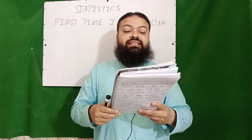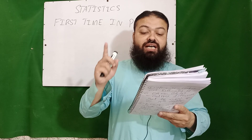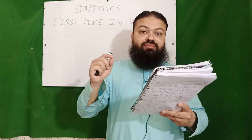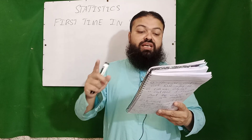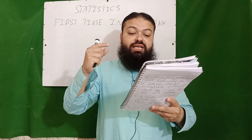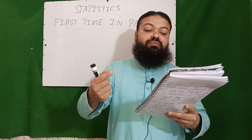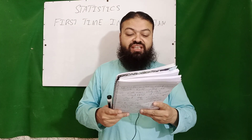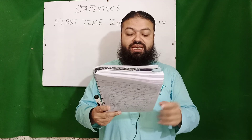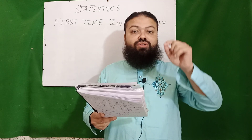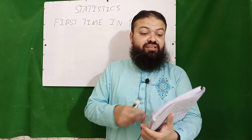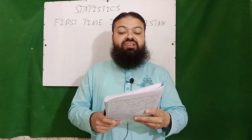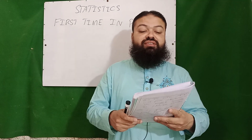Question number five: in 1893, Karl Pearson called the Gaussian distribution the normal distribution. Question number six: normal distribution is also called Gaussian distribution, in honor of Gauss.